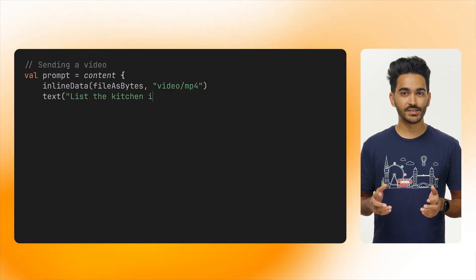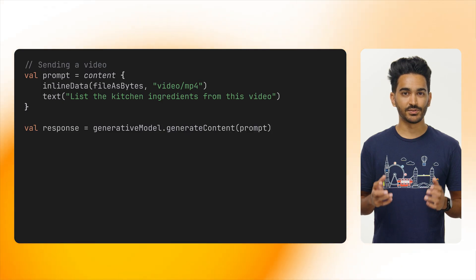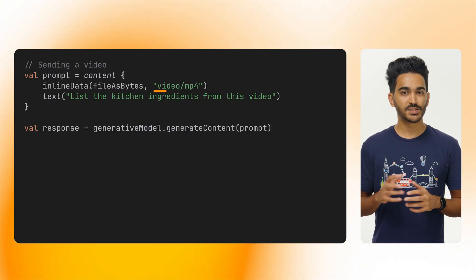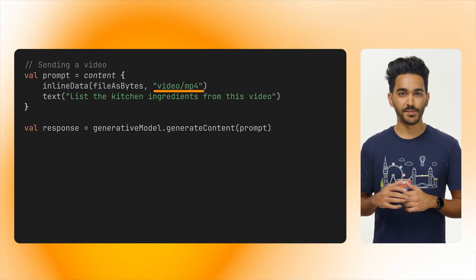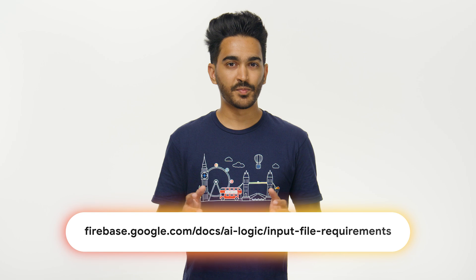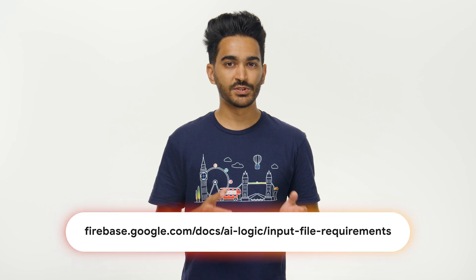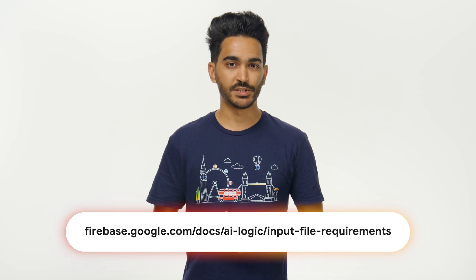Although we are analyzing an image in this meal planning app, Gemini can also analyze other types of media such as audio, video, and even PDFs. You can pass these types of files to the model as inline data, specifying the MIME type. To see the list of supported MIME types, refer to the Firebase documentation.